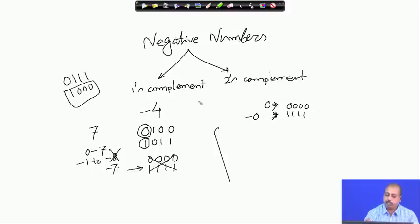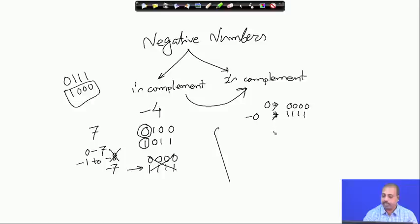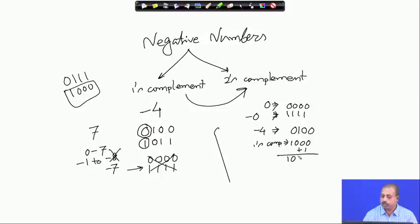Because of this problem, we went for another representation known as two's complement representation. In two's complement representation, after getting the one's complement we add 1 to it. So minus 4 in two's complement representation is found like this: we start with the representation of plus 4, which is 0 1 0 0, then we take the one's complement which is 1 0 1 1, and then we add 1 to get 1 1 0 0. This is the two's complement representation of minus 4.